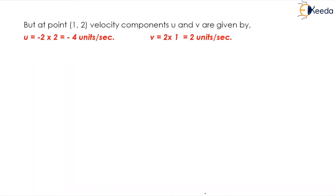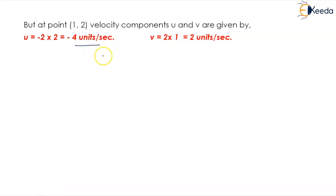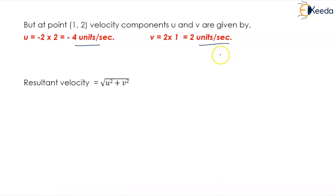At the point (1, 2), the velocity components are: u equals 1 times minus 2, which equals minus 4 units per second, and v equals 2 times 1, which equals 2 units per second.